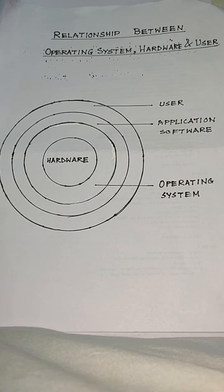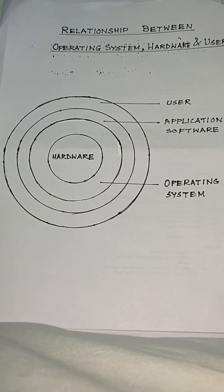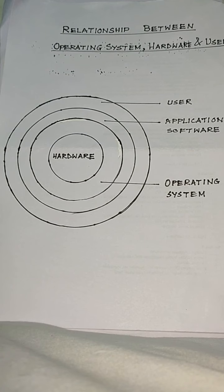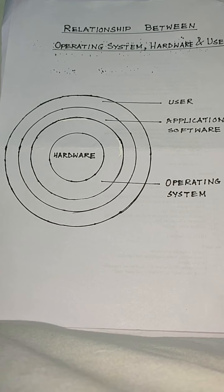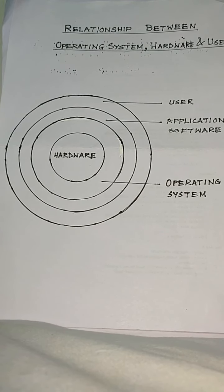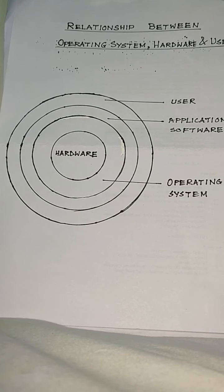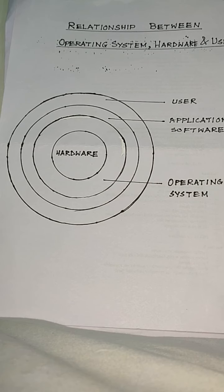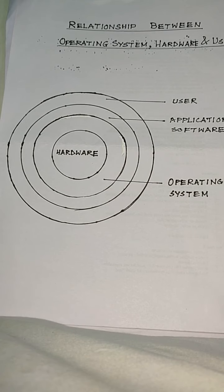Thus, there should be an interface which acts as a link so that the user can interact with the hardware, that is, the computer. This is done by a special software known as the operating system. Here is a diagram showing the relationship between the operating system, hardware, and user. To operate hardware, we need an operating system, which becomes the link between the user and the hardware. Through the operating system, the user can interact with the computer.